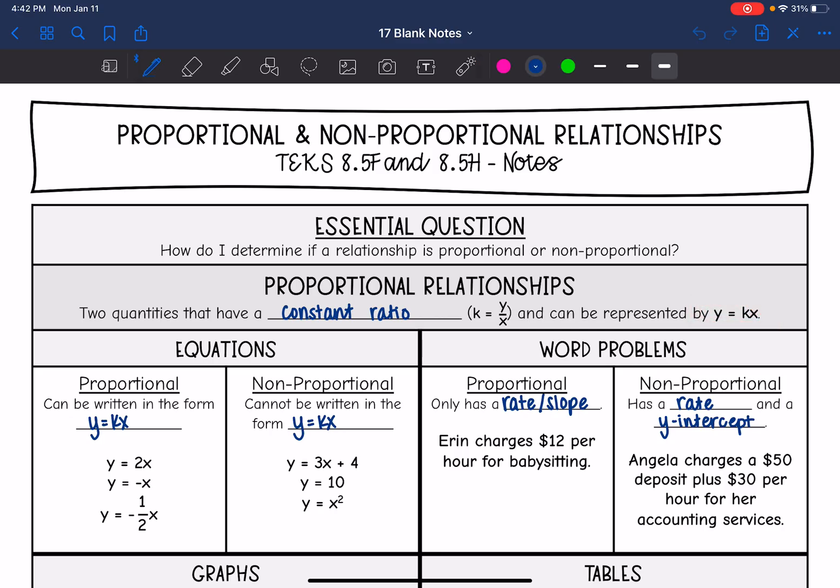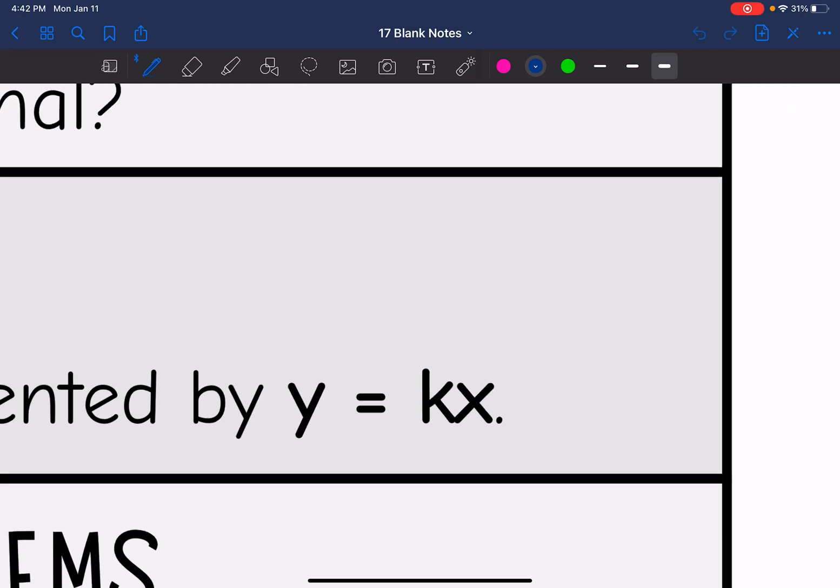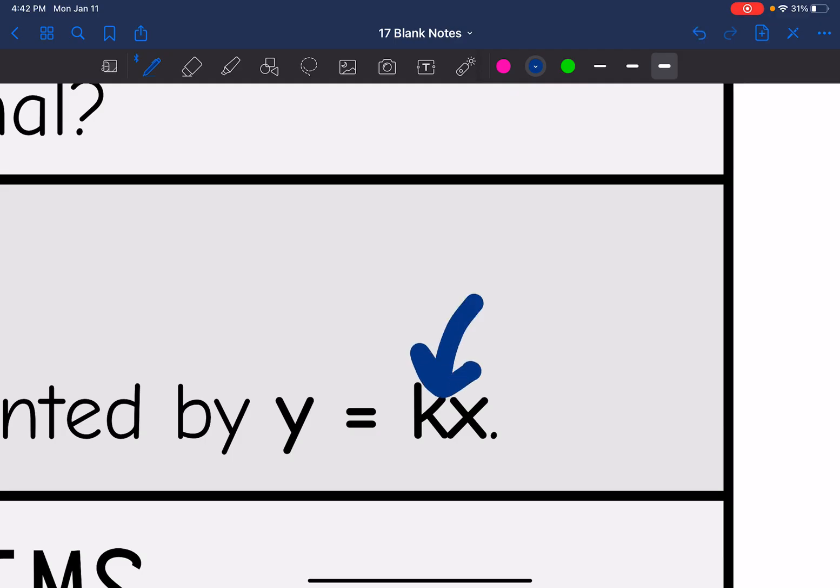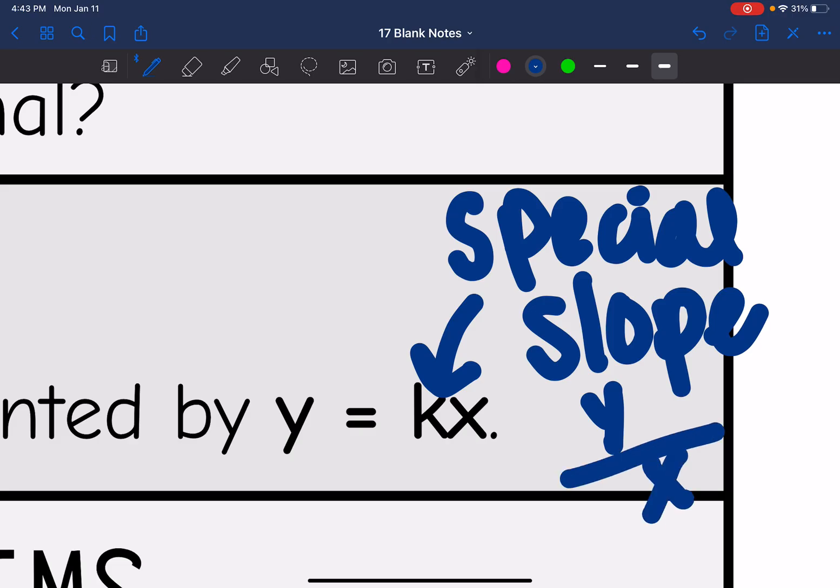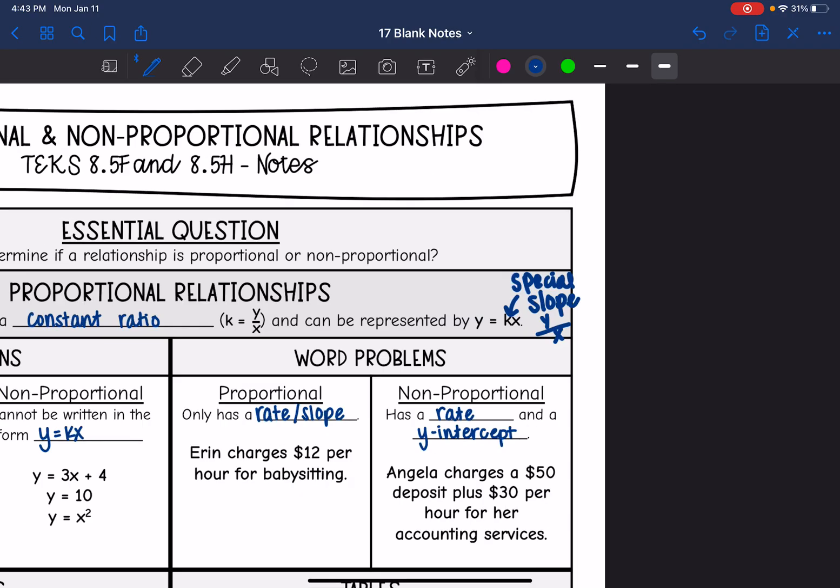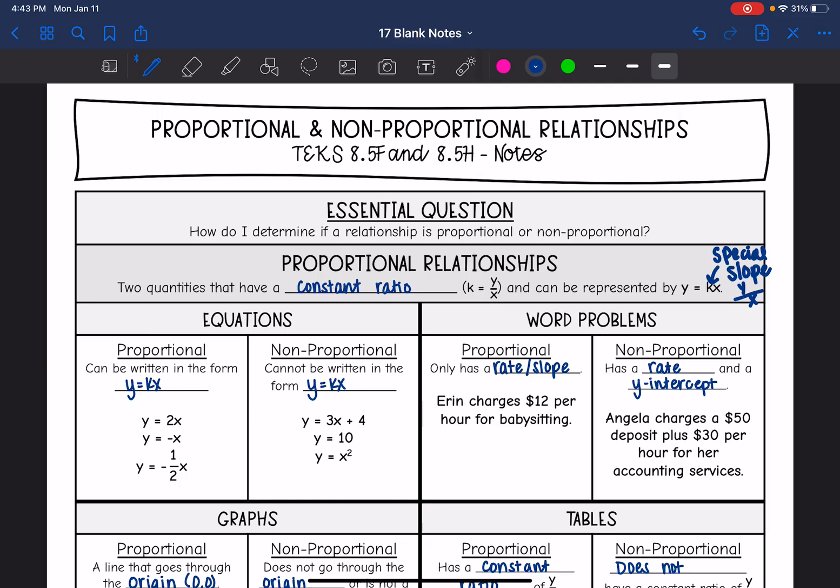So k is just a special type of slope. This is a special slope where the slope formula also works, but y over x also works to find the slope, and that only happens in proportional relationships.